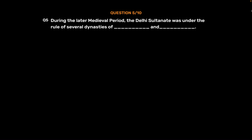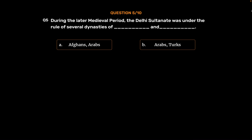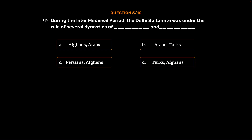Question No. 5. During the later medieval period, the Delhi Sultanate was under the rule of several dynasties of which two groups? Option A: Afghans and Arabs. Option B: Arabs and Turks. Option C: Persians and Afghans. Option D: Turks and Afghans. The correct answer is Option D: Turks and Afghans.